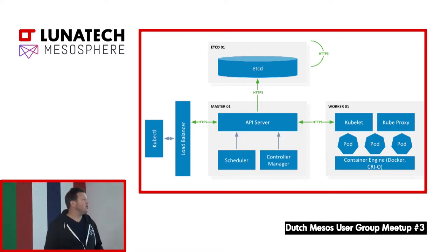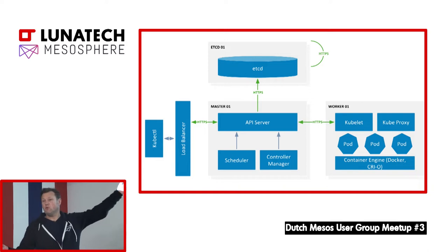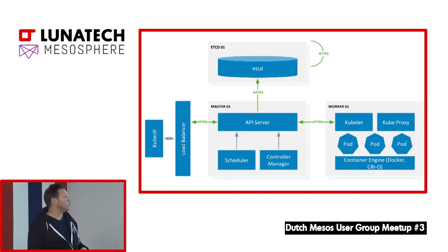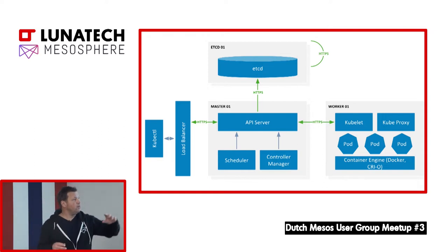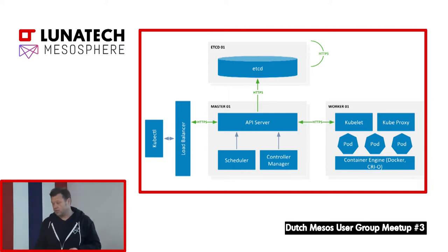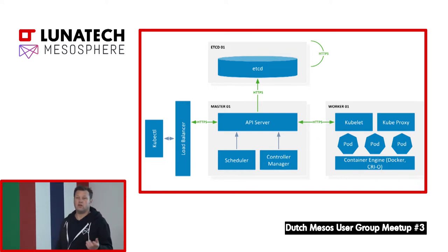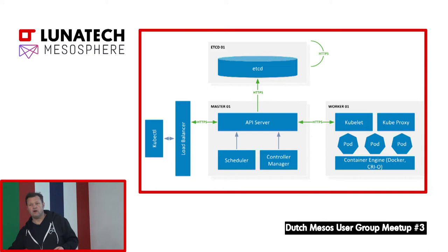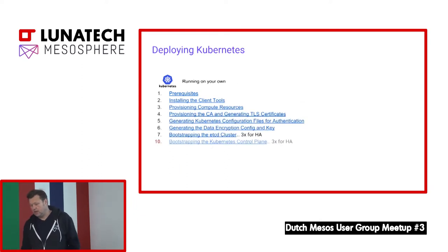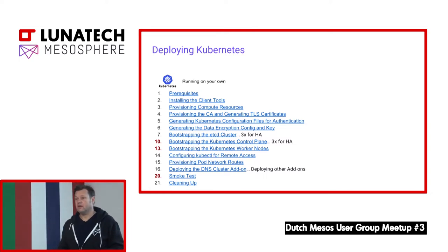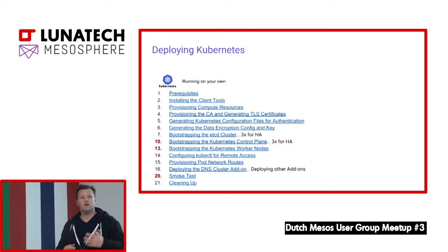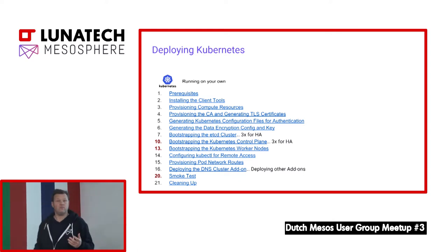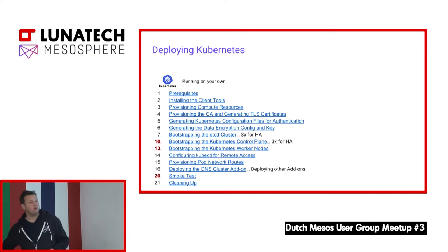What you then need looks like this — a simple diagram of what elements Kubernetes requires: a config server, an API server, a scheduler, a manager, and your kubelets that actually execute the containers. Setting that all up — you can do it on your laptop, but that's not the whole idea of running Kubernetes. You go to the Kubernetes website, look at the extensive documentation on how to set up Kubernetes — that is possible but takes a while.